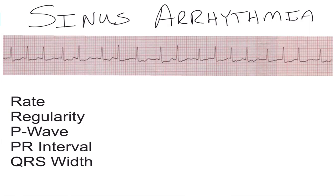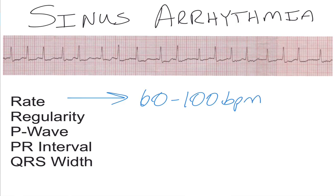So let's take a look at some of the characteristics of the sinus arrhythmia. You'll note that the rate is going to be generally between 60 to 100 beats per minute. You'll notice in the strip above that it's a little faster than 100 beats per minute, and that's because this strip was taken when the person's respirations were increasing.